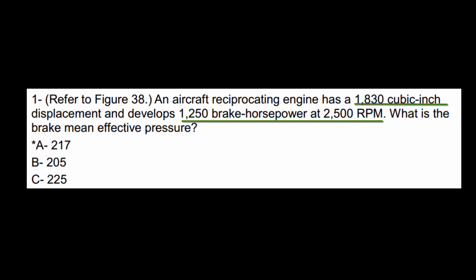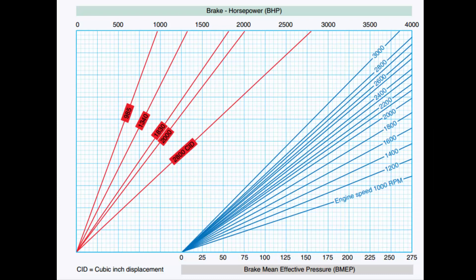First we're going to find this 1250 brake horsepower line at the top of the chart here. And we're going to follow this down to a diagonal line. And this diagonal line is for our engine, this 1830 cubic inch engine.